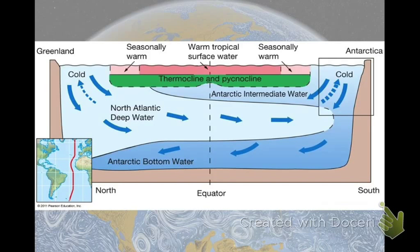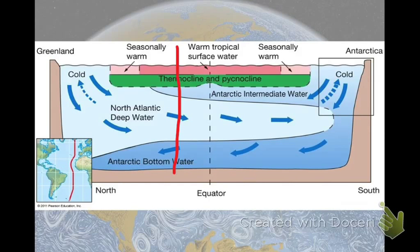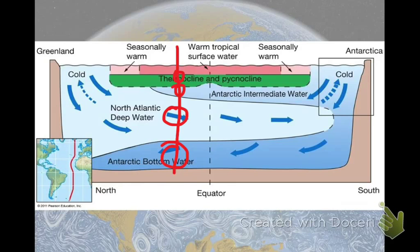This is a more general cross-section from north to south. You can see that almost everywhere, if you were to drop a sensor on a really long cord, you would hit a water mass that's cold and salty, then one that's cold but not as cold, and you'd be able to get these different layers of water as you move down almost anywhere in the Atlantic.